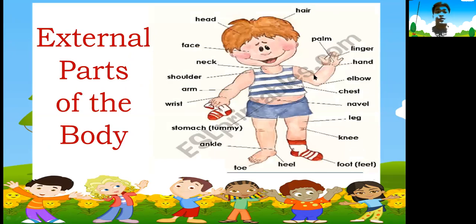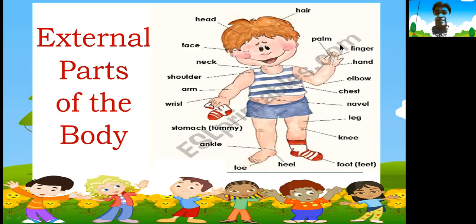Let us start with the external parts of the body. Repeat after me: hair, palm, finger. Let's count how many fingers we have: 1, 2, 3, 4, 5 — five fingers in one hand. So it's like palm plus finger equals hand.